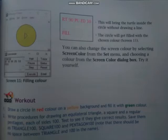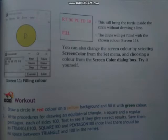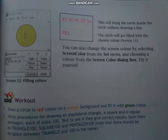The second workout is: write a procedure for drawing an equilateral triangle, a square, and a regular pentagon, each of side 100. Test to see if they give correct results, and save them as triangle100, square100, and pentagon100. Note that there should be no space between the shape name and 100. यहाँ पर processor define करनी है square, pentagon, और triangle के लिए, और processor name only one word में दे सकते हैं।